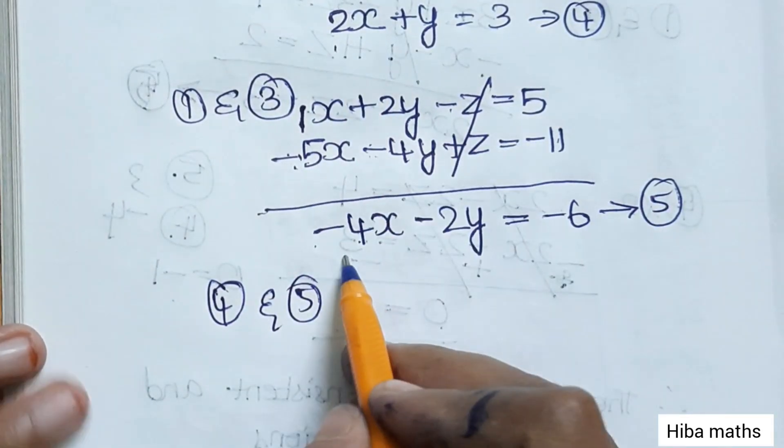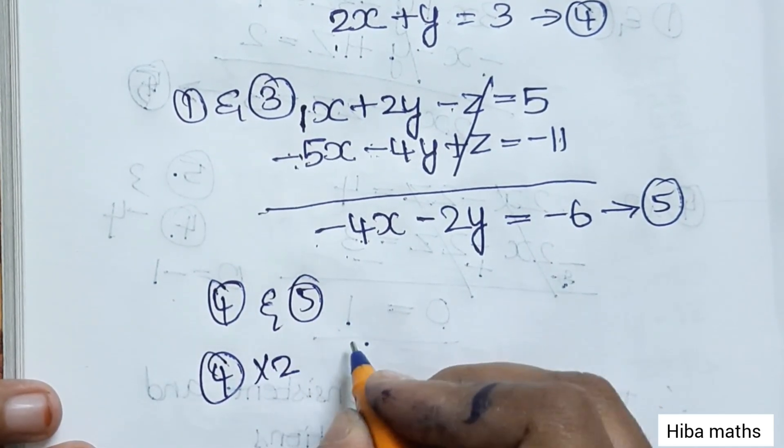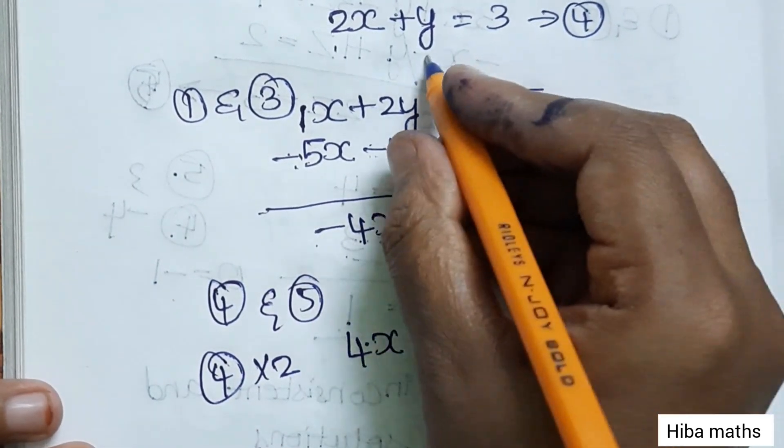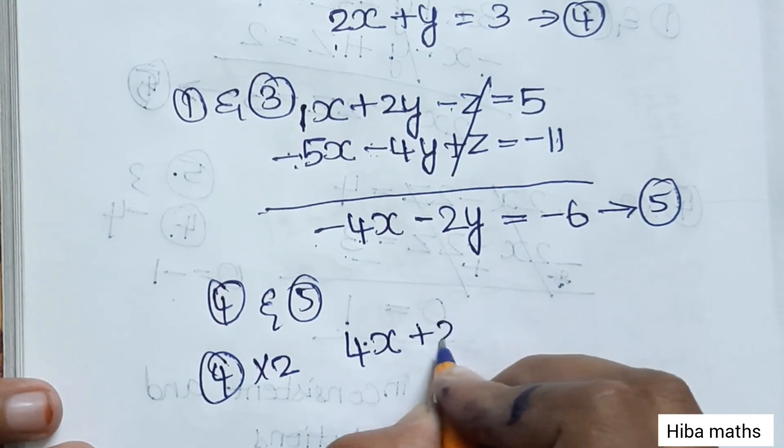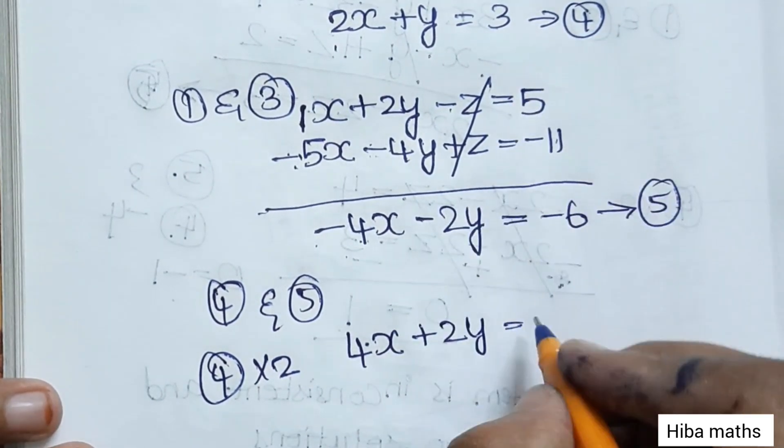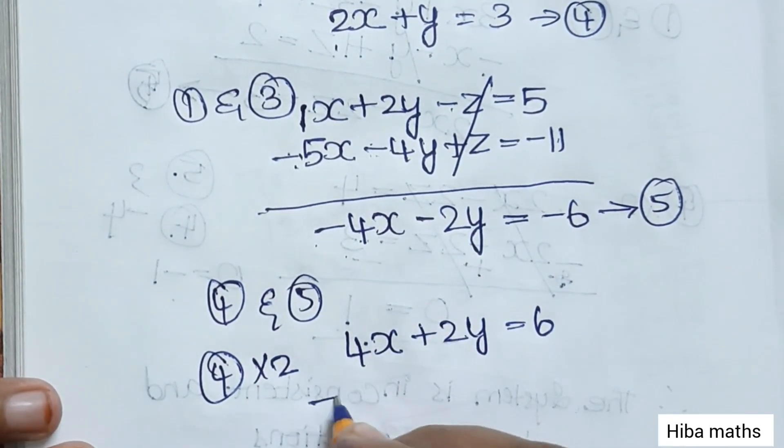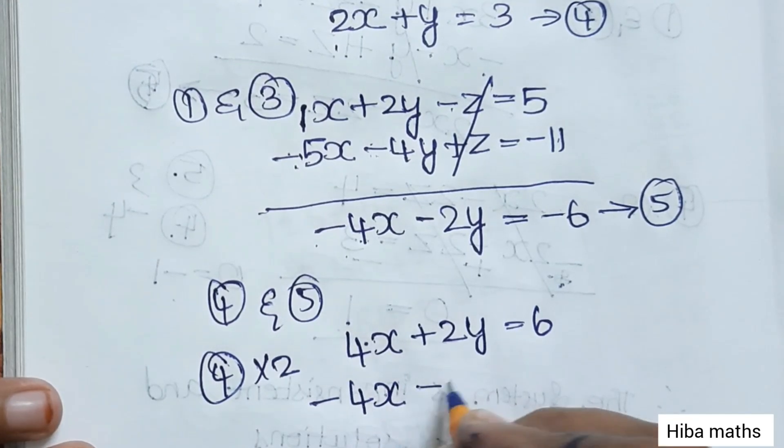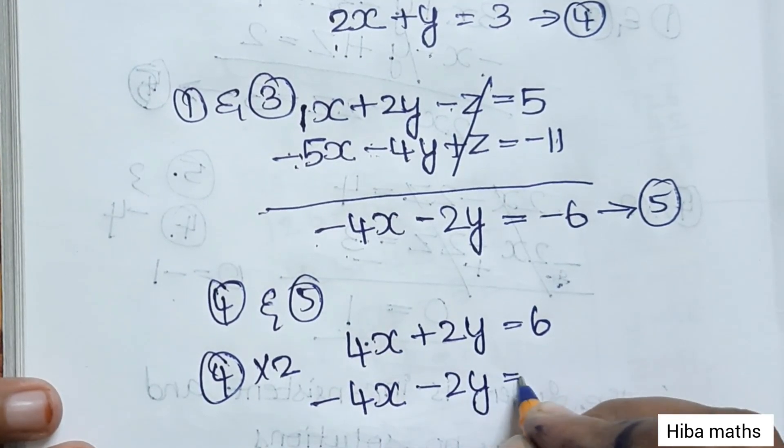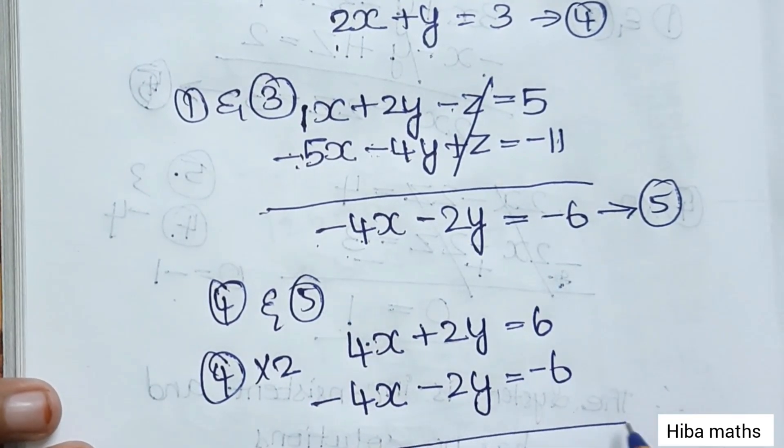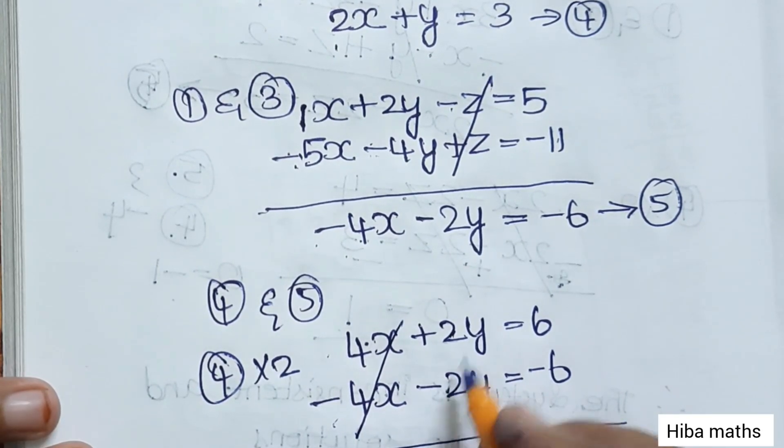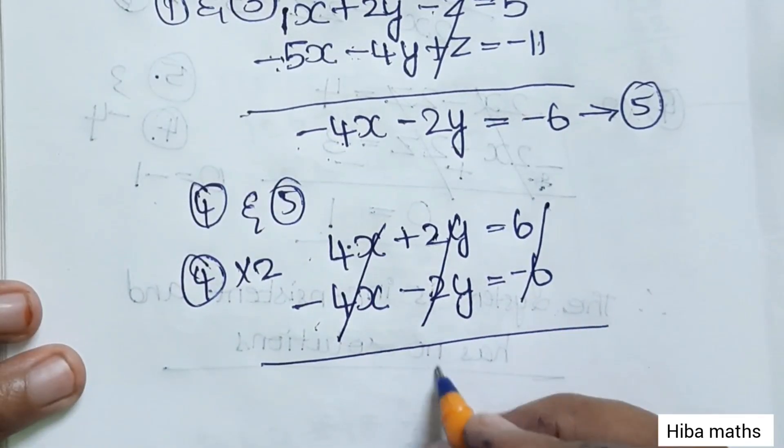Multiply equation 4 by 2: 4x plus 2y equals 6. This is the fifth equation. Minus 4x minus 2y minus 6. Plus 4 and minus 4 cancel, plus 2 and minus 2 cancel, plus 6 minus 6 equals 0.